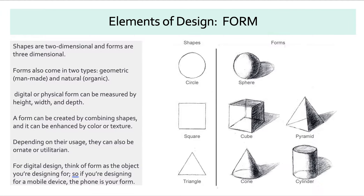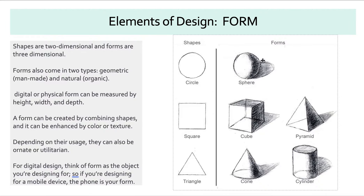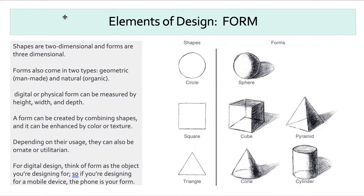Shapes make forms. Shapes are two-dimensional — so the shape of this round object is a circle, while the form of this round object is a sphere. The difference is that the circle is flat, with only x and y dimensions, while the sphere is 3D with x, y, and z dimensions. Similarly, a square becomes a cube or a pyramid — if you take those four corners and pinch them together, you get a pyramid. A triangle can become a cone. So: shapes are two-dimensional, forms are three-dimensional.